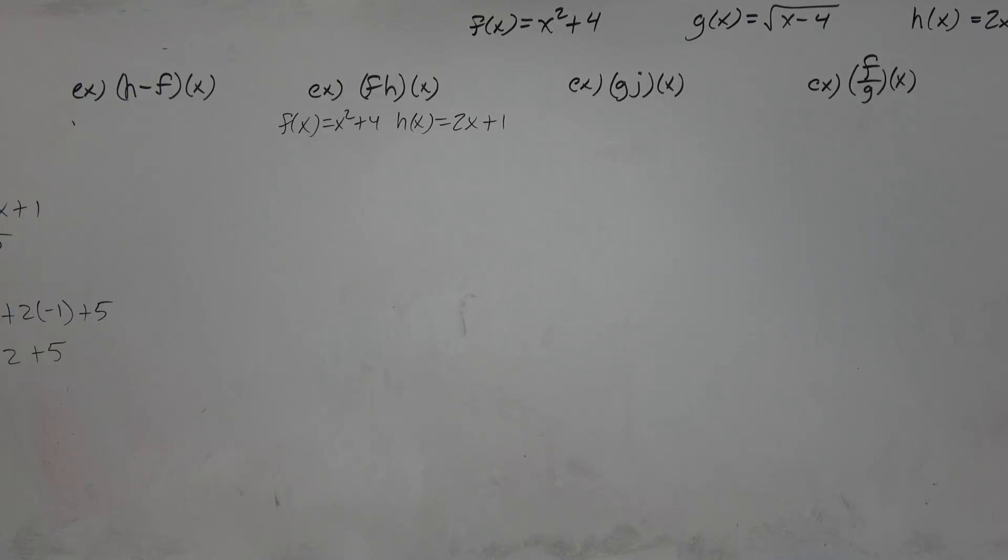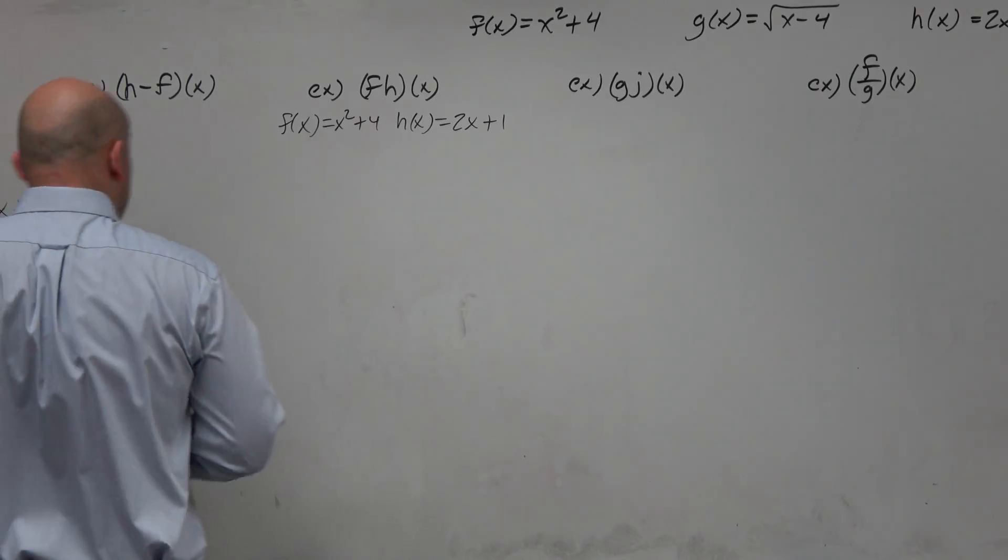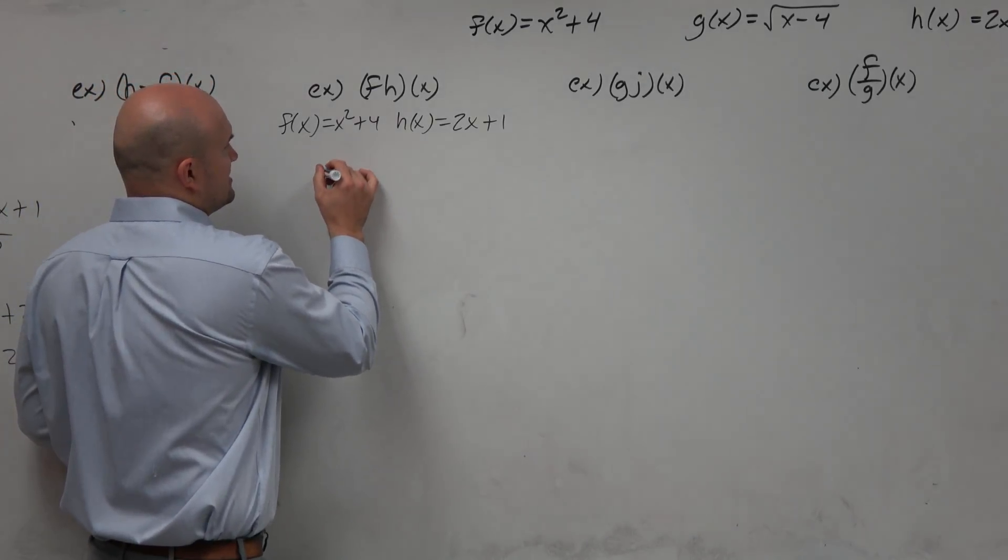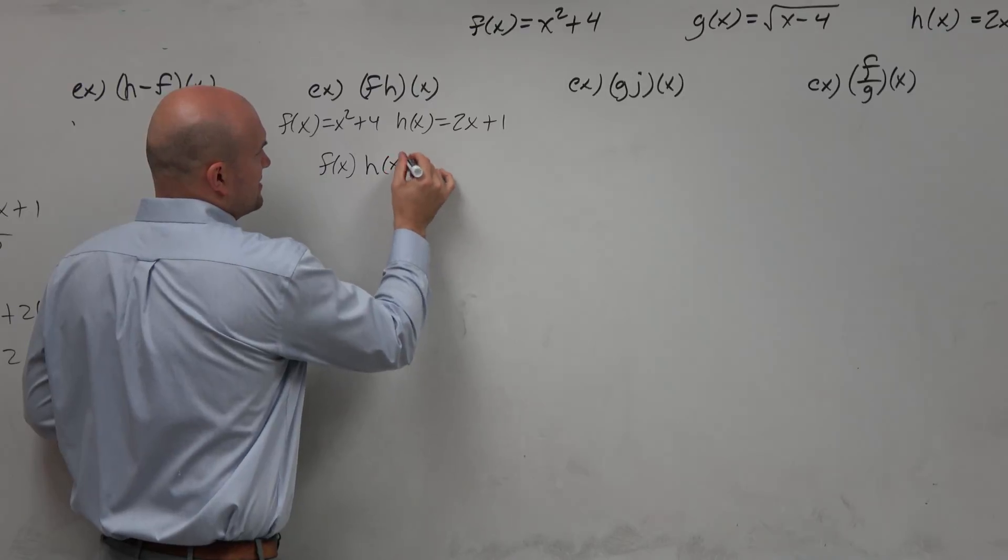And so if we have f of h of x, so basically they're not separated by anything, then you could say that this is f of x times h of x.